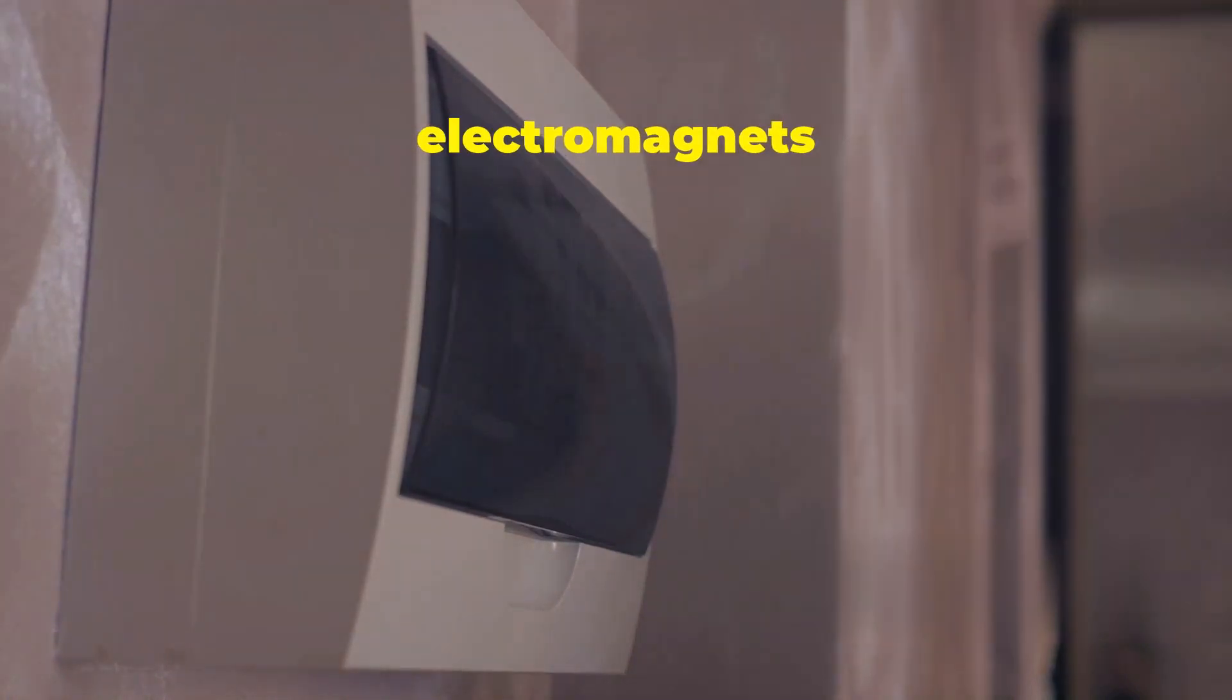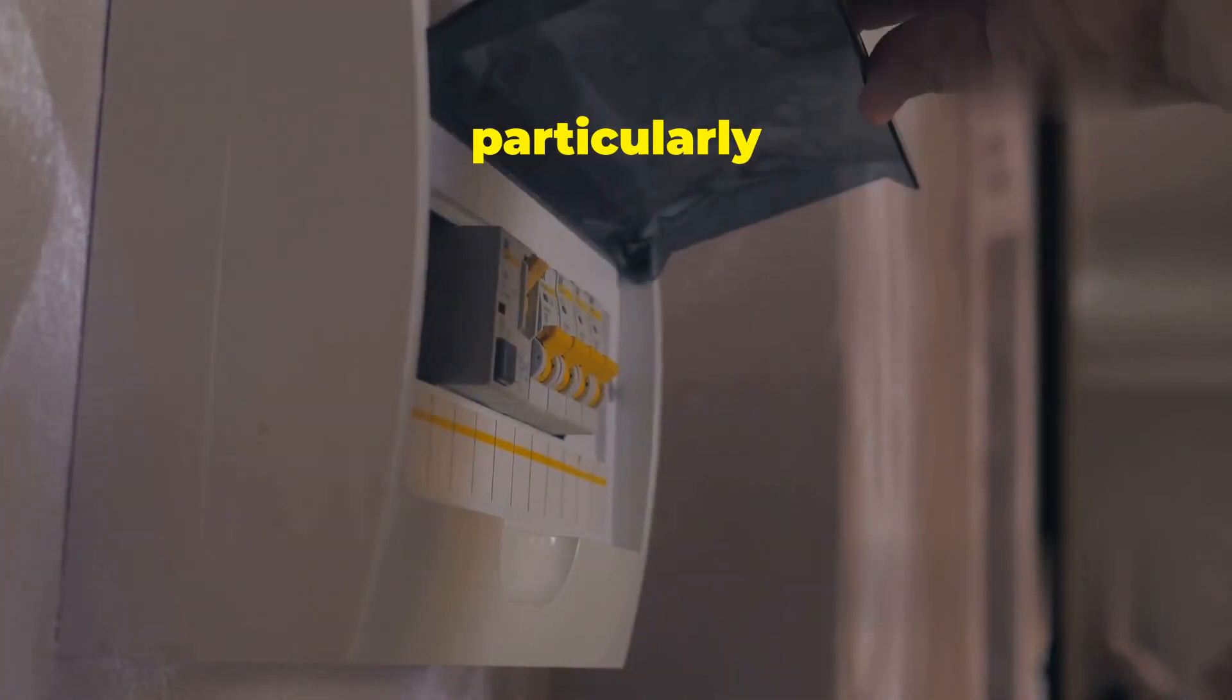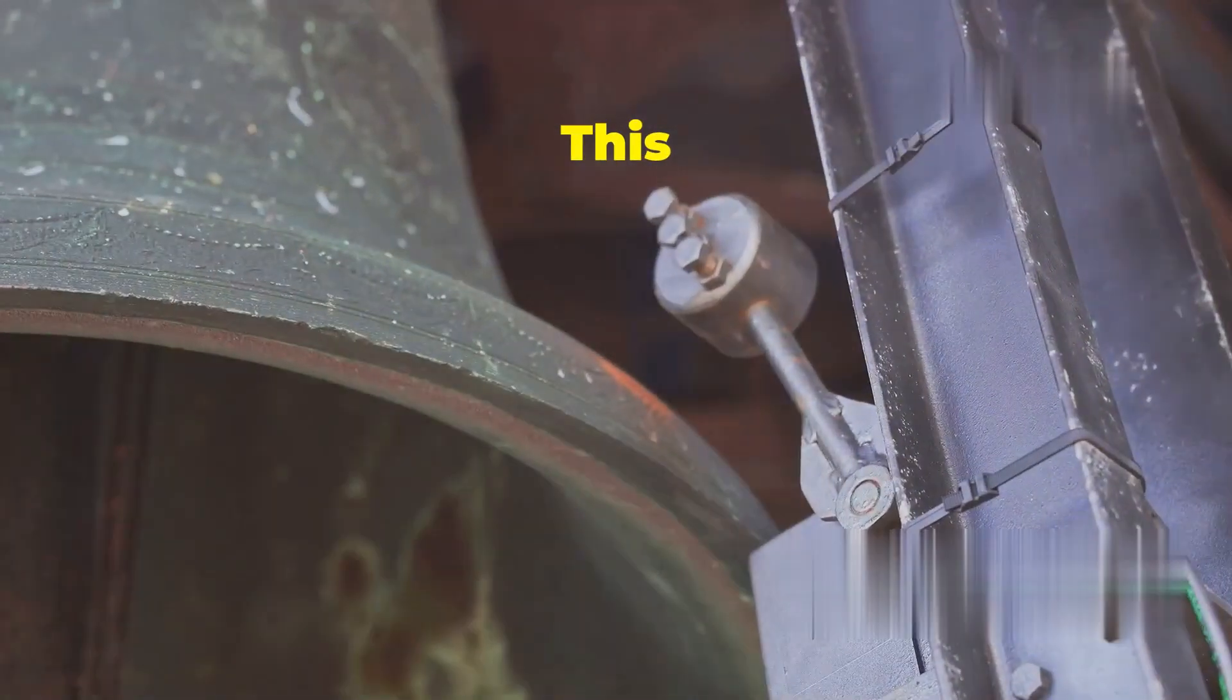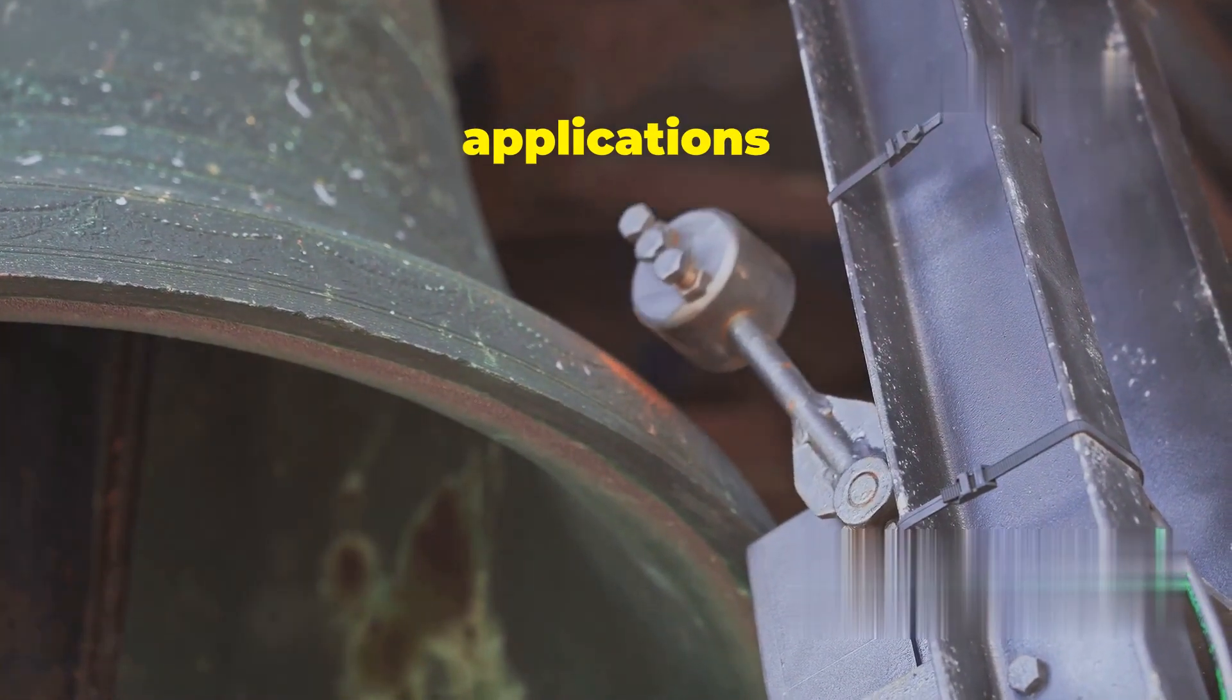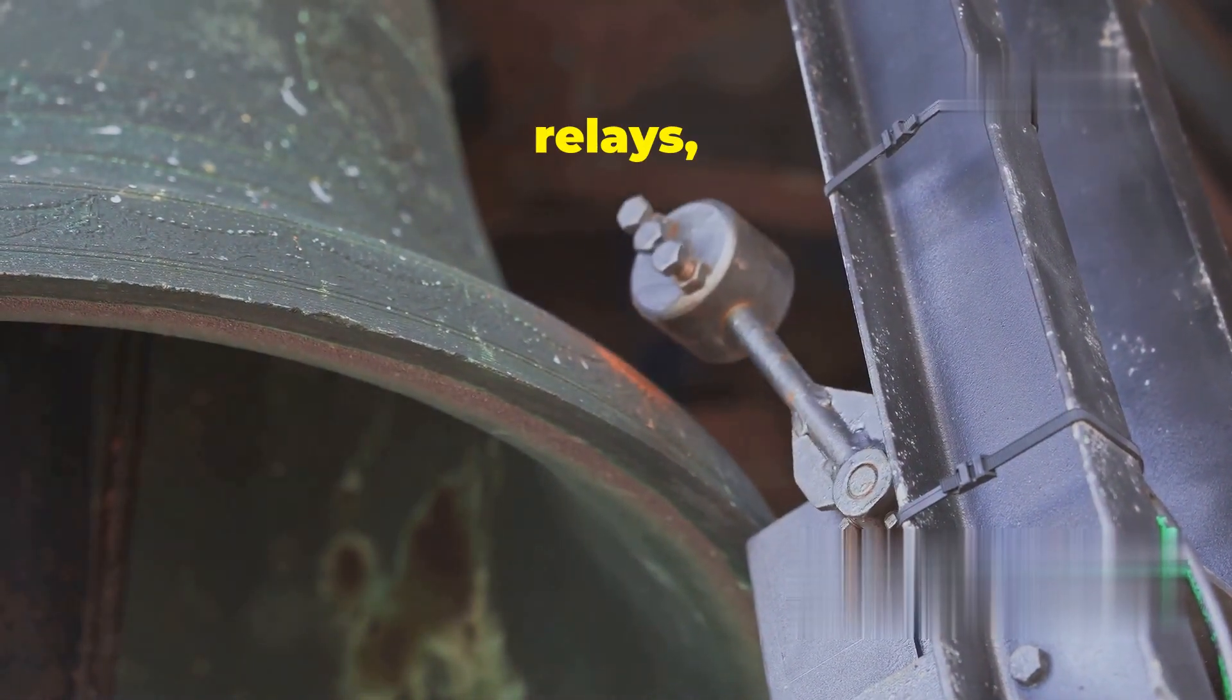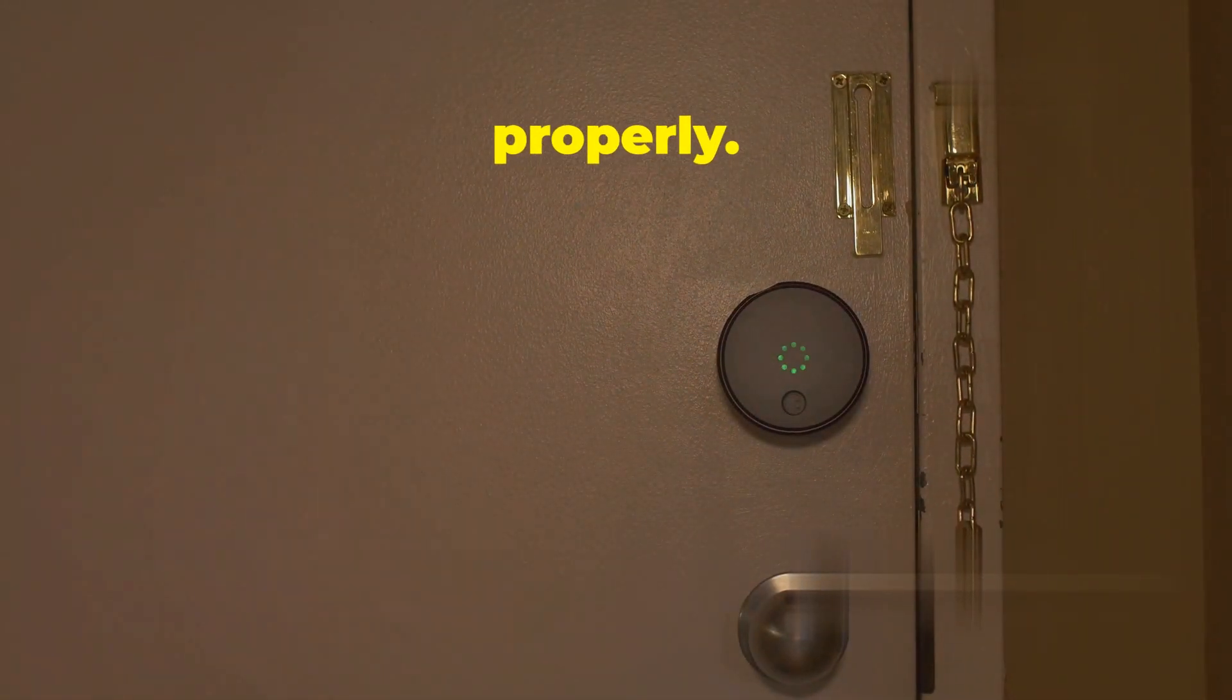Switchable: Unlike permanent magnets, which are always on, electromagnets can be switched on or off at will. This feature is particularly useful in applications where a temporary magnetic field is needed. This makes them ideal for applications such as electric bells, relays or magnetic locks. These devices rely on the ability to control the magnetic field to function properly.